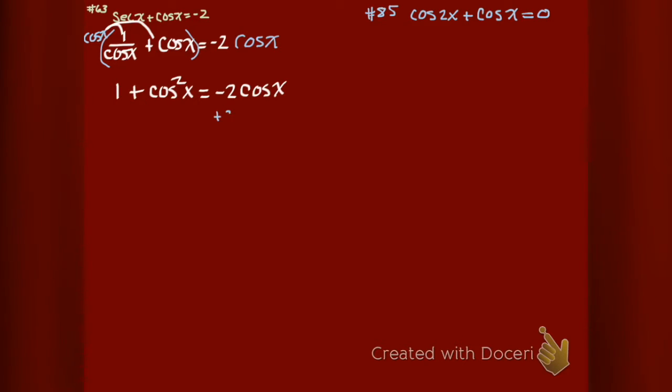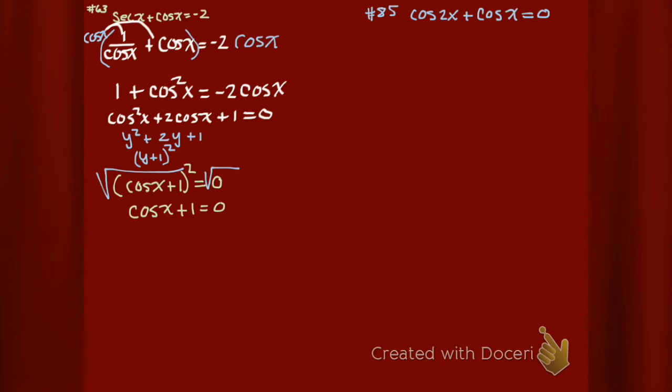Now I want to get it all to one side and try to factor. So I add that 2 cosine x to both sides. I'm also going to rewrite that left side in descending order so that it looks familiar. If you can factor y squared plus 2y plus 1, it factors into y plus 1 squared. Then cosine squared x plus 2 cosine x plus 1 also factors into cosine x plus 1 squared. That says cosine x plus 1 is equal to 0 if I take the square root of both sides.